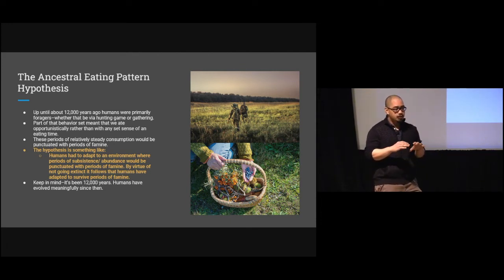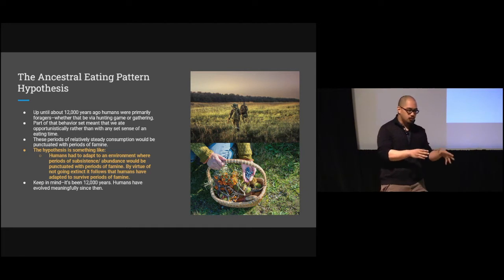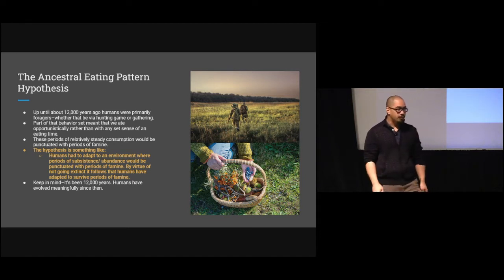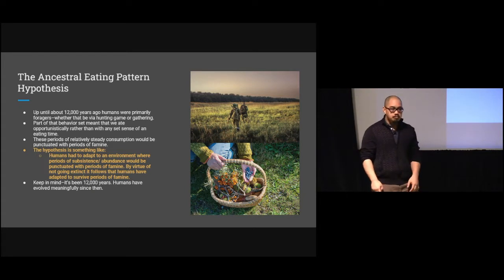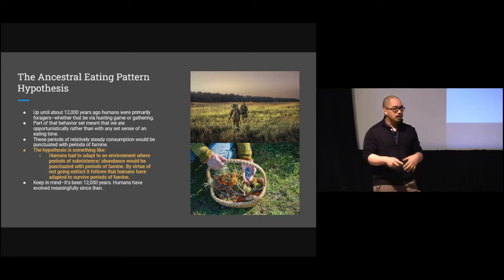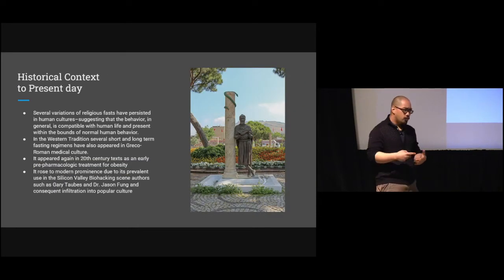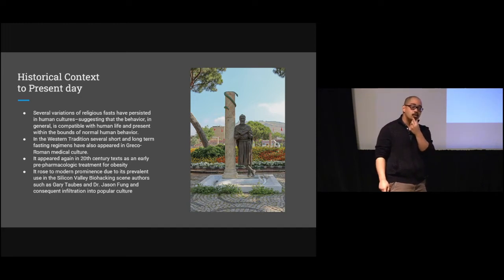Knowing that we had feast and famine cycles, we had to develop the apparatus to handle famine. The idea is that if our system was designed to handle periods of famine, is it possible we were designed to thrive with intermittent periods of famine? That's the hypothesis. And some version of a fast has been integrated into almost every culture — which is a big deal.